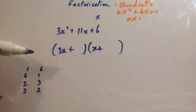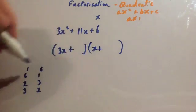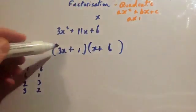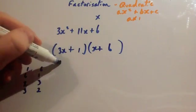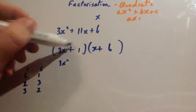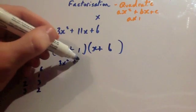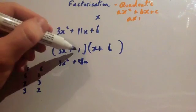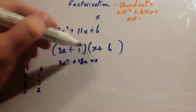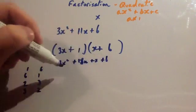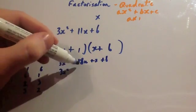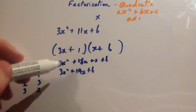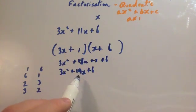Let me show you what would happen if you put in the wrong one. If I had chosen 1 and 6 — putting 1 here and 6 here — well, 3x times x is 3x squared. 3x times 6 is 18x — already I can see that's too big; I want 11x. 1 times x is plus x, and 1 times 6 is plus 6. So you'd get 3x squared plus 19x plus 6. That one wouldn't work because you don't have the right middle term.